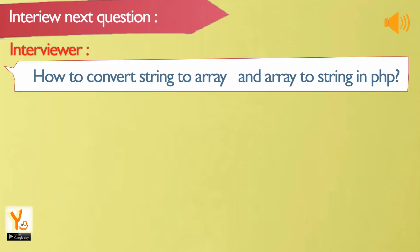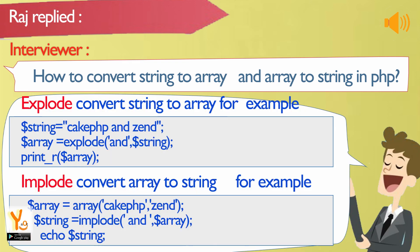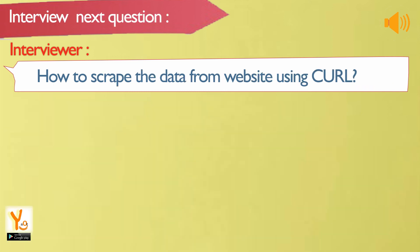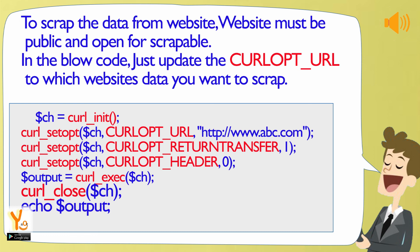How to convert string to array and array to string in PHP? explode converts a string to an array. implode converts an array to a string. To scrape data from a website using cURL, the website must be public and open for scraping. In the below code, just update the CURLOPT_URL to the website whose data you want to scrape.